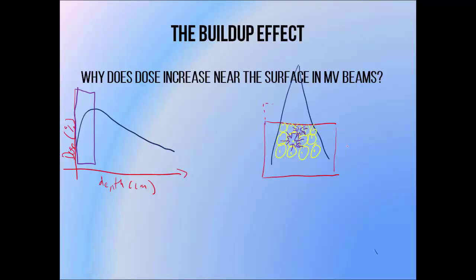If there was extra medium above points in the buildup region, there would be extra radiation produced in this medium which would contribute to dose at these points, so the buildup region would receive a higher dose. But points close to the new surface would still receive a lower dose, since there's no medium above and thus no radiation being produced there. This is a rough way of looking at it, but it's useful to know that areas next to the edge of a patient will get a lower dose than if they had more adjacent material.